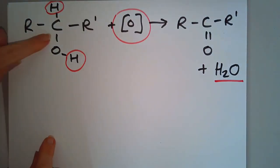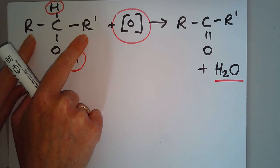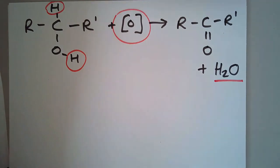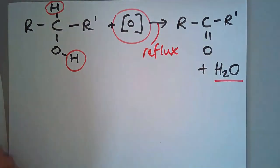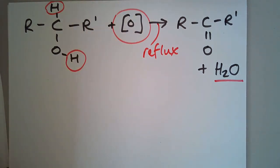It's a secondary alcohol because the carbon that has the OH attached to it is attached to two other carbons. We use the same oxidizing agent, we're making a ketone. The conditions here: reflux. We don't need to worry about this being further oxidized because it can't be.